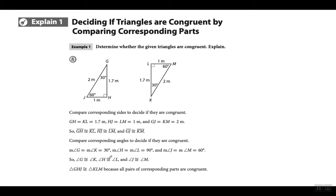They're going through all the details — it looks complicated but they're just comparing: side GH equals side KL, both equal 1.7 meters; side HJ equals side LM, both equal 1 meter. On your homework they'll probably make you fill in the blanks, but all you're doing is comparing which side is congruent to which side in the other triangle. If all three corresponding sides and all three corresponding angles are congruent, then both triangles are congruent.